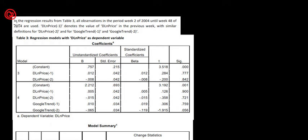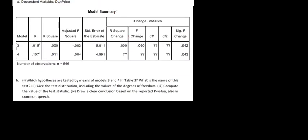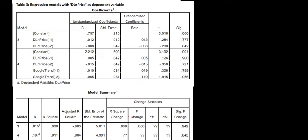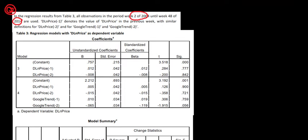Let's have a look at question 2. In the regression results from table 3, we use all the observations from week 2 of 2004 until week 48 of 2010. We have certain variables which we'll discuss in a second. We have two regressions, and the dependent variable in both cases is the change in the logarithm of the price of the stock of Apple.